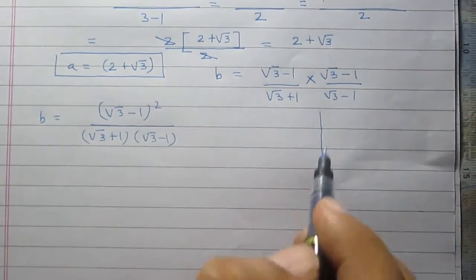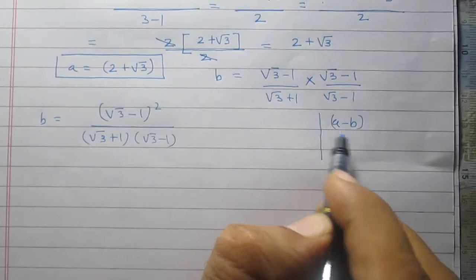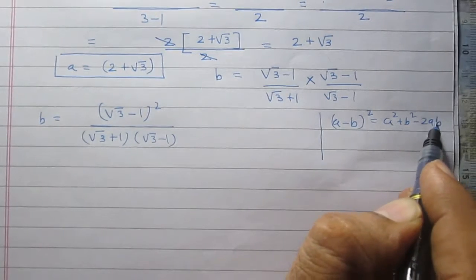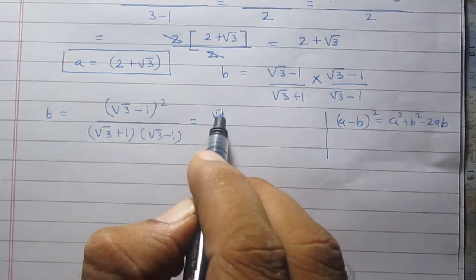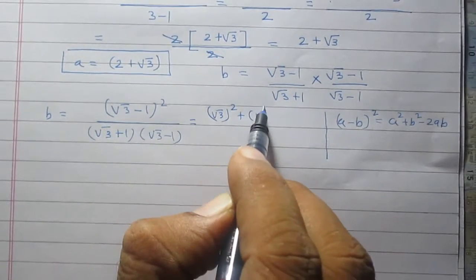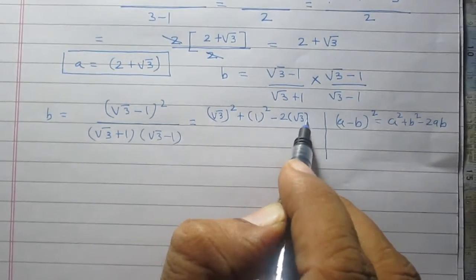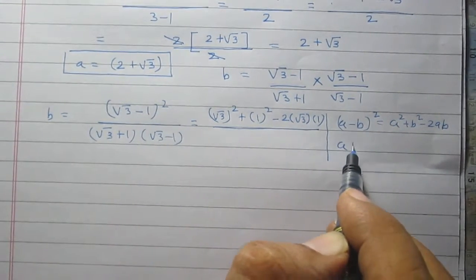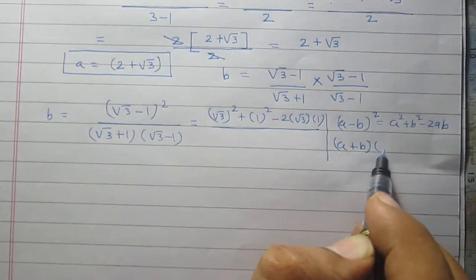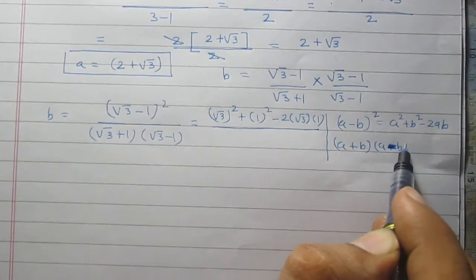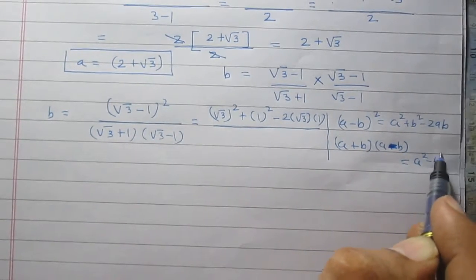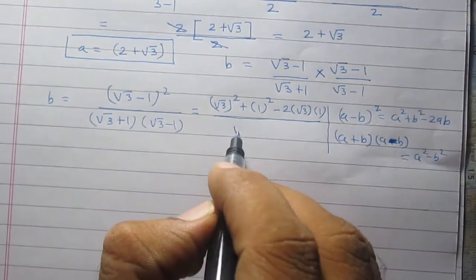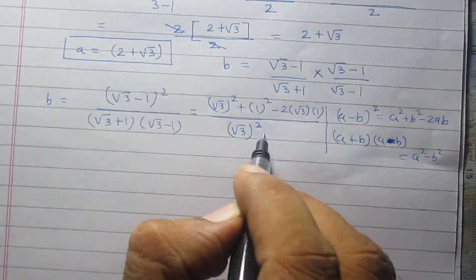In order to simplify the numerator, we apply the identity: a minus b whole square is equal to a squared plus b squared minus twice of ab. So the numerator is a squared plus b squared minus twice of ab. For the denominator, we apply the same identity used earlier: a plus b multiplied by a minus b is equal to a squared minus b squared. Using this identity, the denominator can be written as square root of 3 squared minus 1 squared.